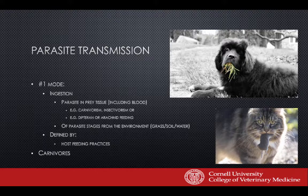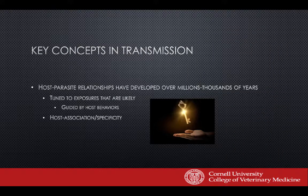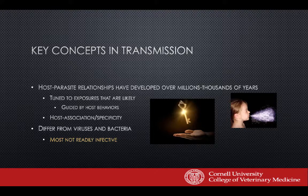The number one mode of transmission for parasites in general is ingestion — either in prey tissue including blood, so carnivorism is key for cats and dogs, or parasite stages from the environment. These routes have evolved and are guided by host feeding preferences. Host-parasite relationships have been tuned over lots of time to make transmission most likely when exposures are most likely — essentially guided by host behaviors.